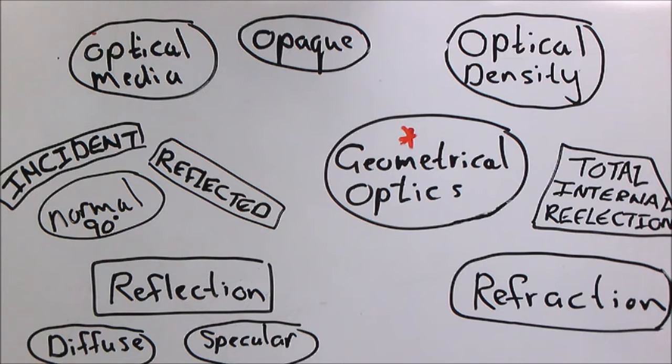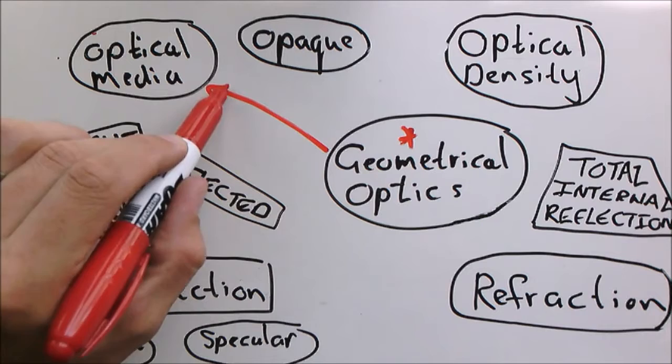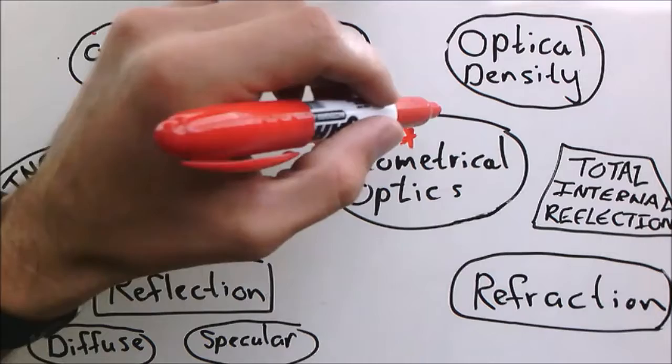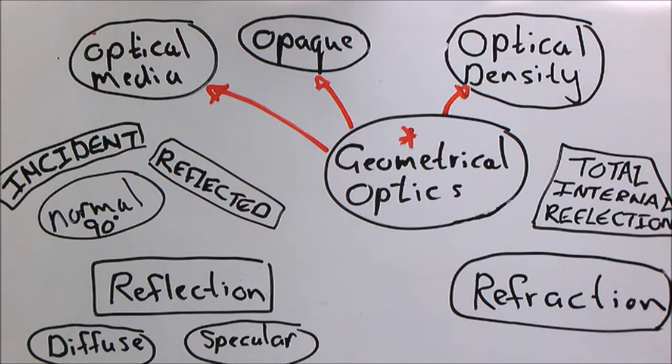So first of all optical media is what light travels through. When something is opaque it means it does not allow any light through. If an object is optically dense that means it will slow down light as it travels through that medium.